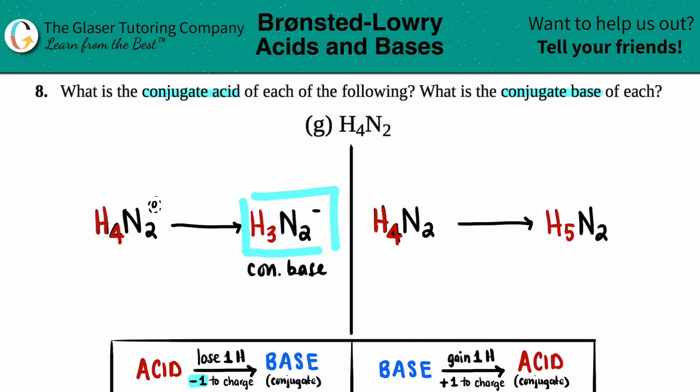And now we just have to account for the charge. Since you gained a hydrogen you're going to plus one to the overall charge. So just like before there was nothing here, that's zero. Zero plus one is just a plus one or I could just say a plus. And this would be the conjugate acid H5N2, conjugate acid.